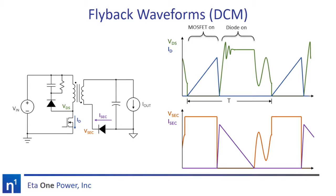This example considers discontinuous mode, or DCM operation, where the transformer current goes to zero in each period. After the diode or synchronous rectifier turns off, the primary side drain current rings for the remainder of the period before the transistor turns on. When the primary side transistor turns on, it will discharge the remaining voltage on its drain, causing capacitive switching loss.